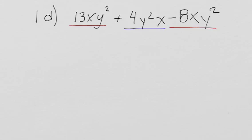One of the things I can do is write them out without the exponents. So 13xy², because y² is y times y, and 4 times y times y times x,